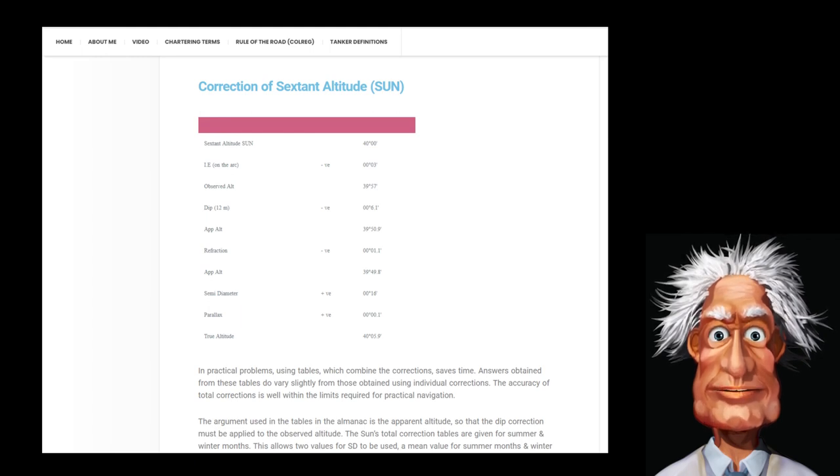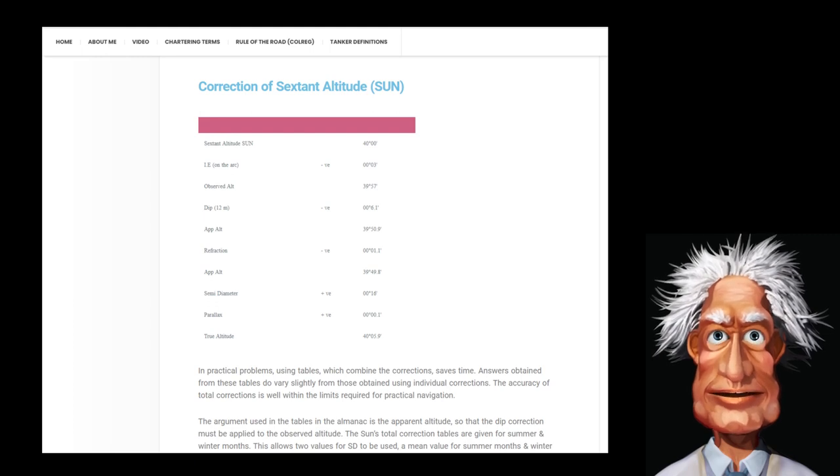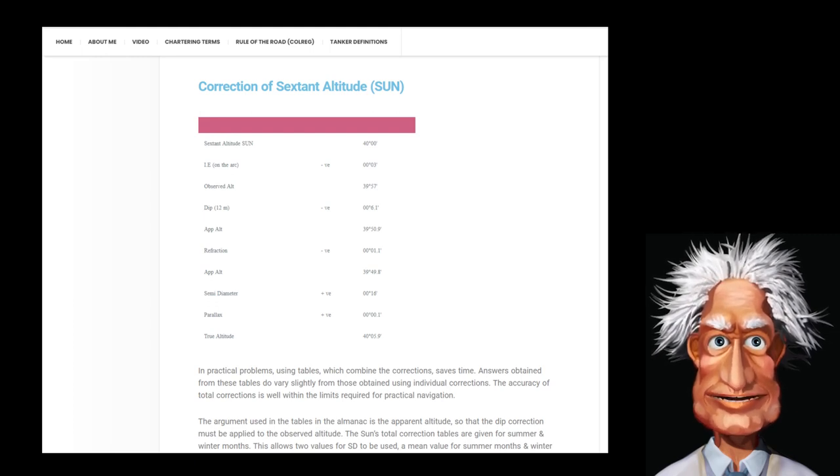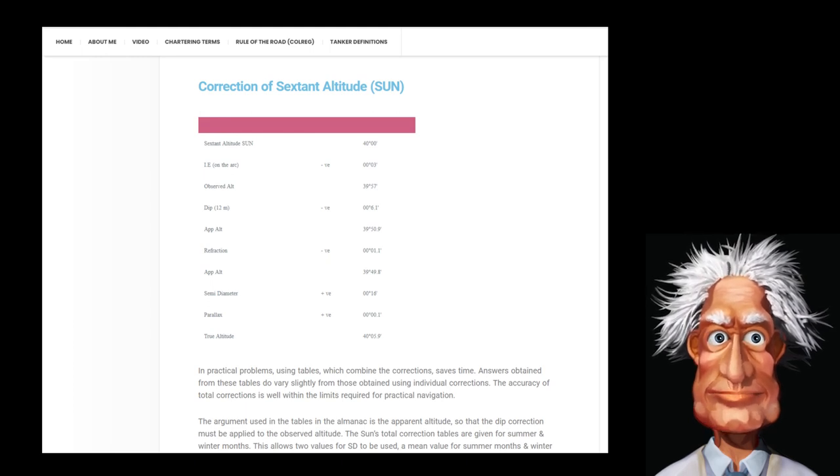So, navigation using the sextant works all over the world, and professional sailors do correct for the curvature of the earth based on a sphere with a radius of 6.371 kilometers. The earth is not flat!